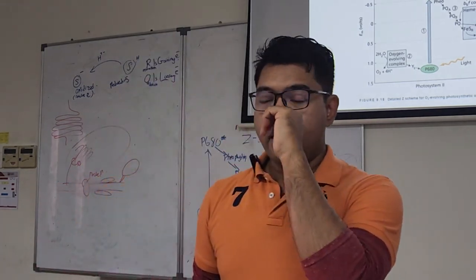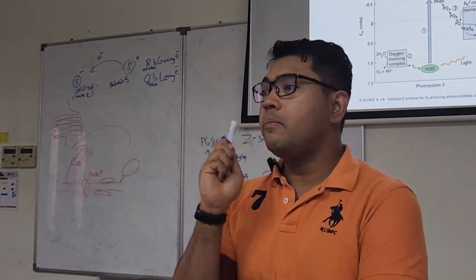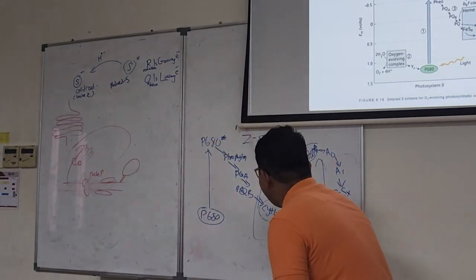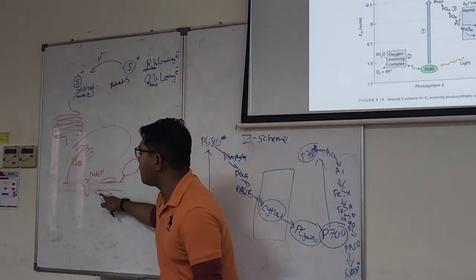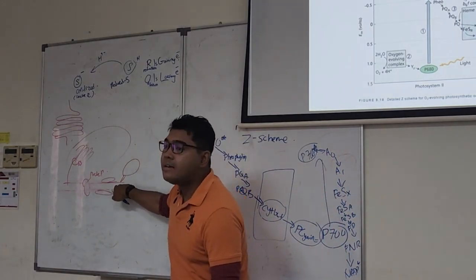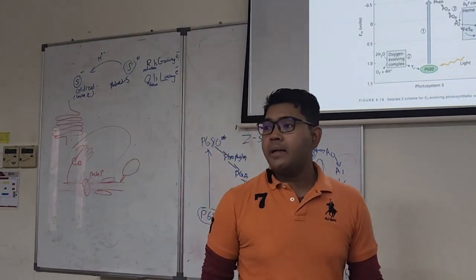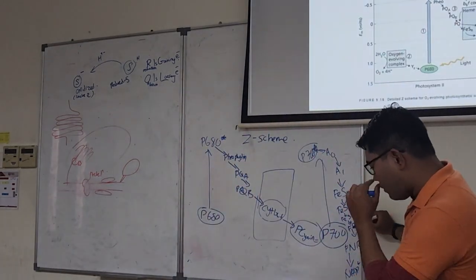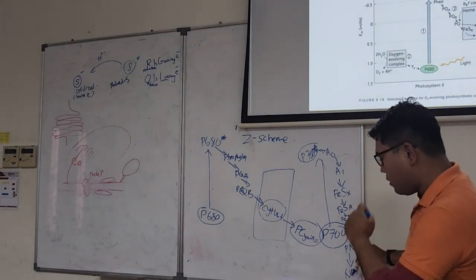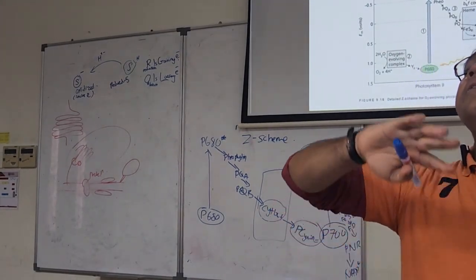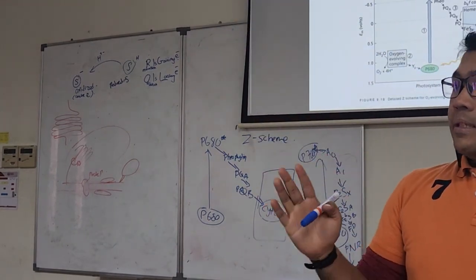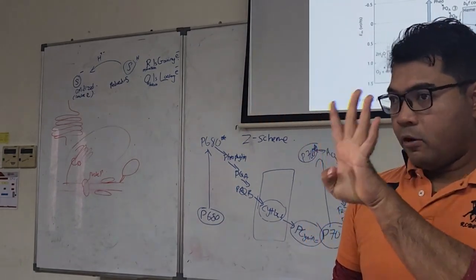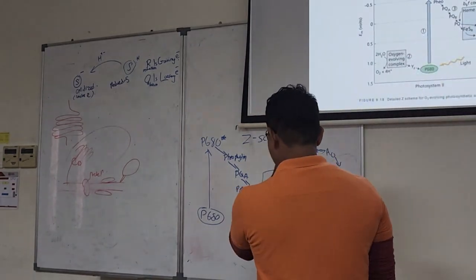But bear in mind one thing. Not all of them are integral proteins. Some of them are proteins on the surface. For example, this plastocyanin here. It's not in the thylakoid membrane. It's outside. And this ferredoxin, FNR, and also NADP plus are also in the stroma. They are not necessarily integral membrane proteins. Integral membrane proteins only for sure are the ones that you learned just now.